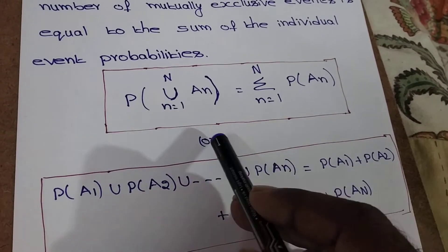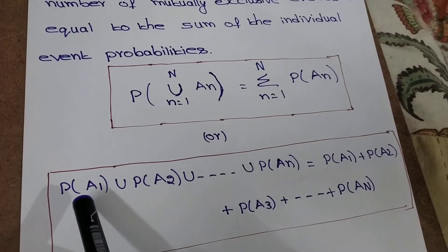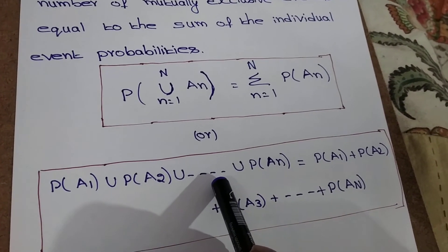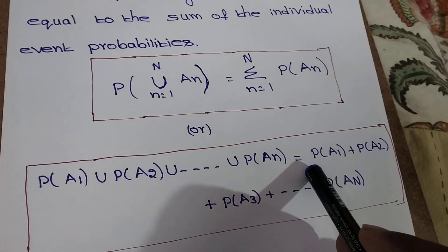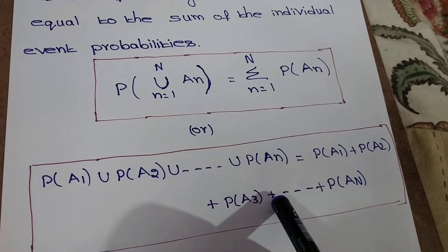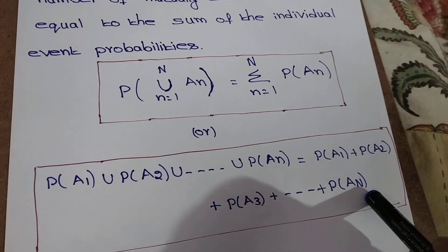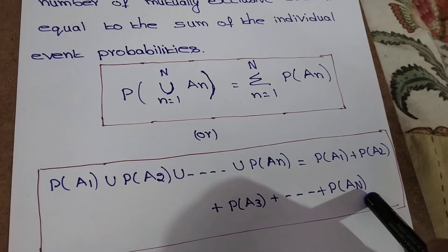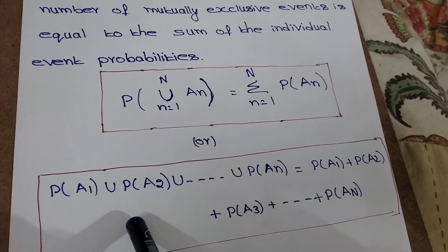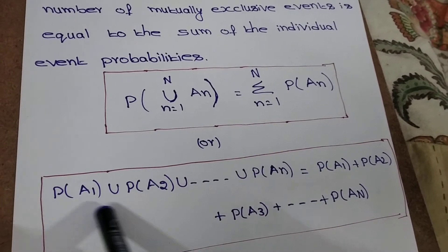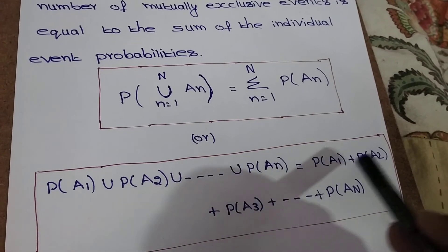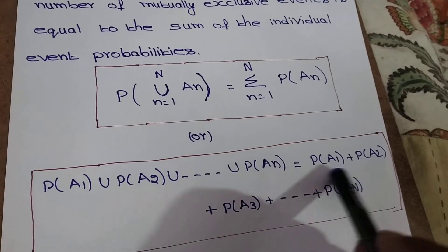This equation can also be written as P of A1 union A2 union up to AN equals P of A1 plus P of A2 plus P of A3, and so on, up to P of AN. So for N mutually exclusive events, the union of probabilities equals the summation of probabilities.